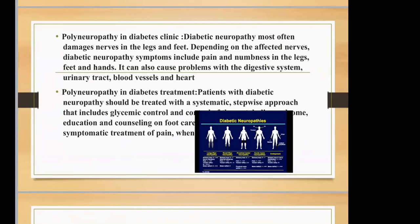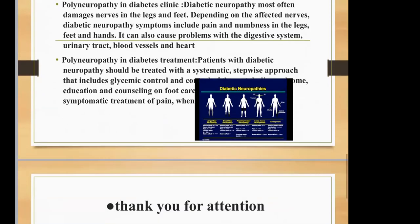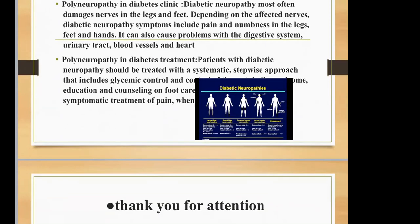Diabetic neuropathy most often damages nerves in the legs and feet. Depending on the affected nerves, symptoms include pain and numbness in the legs, feet, and hands. It can also cause problems with the digestive system, urinary tract, and blood circulation. Treatment should include systemic approaches including glycemic control.